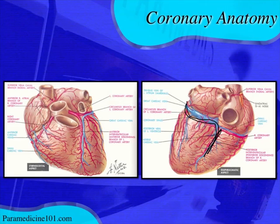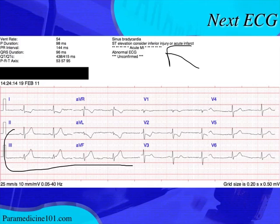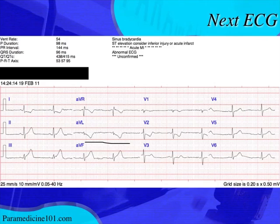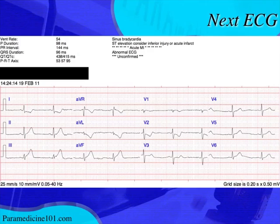We got a second 12-lead from the crew that ran the case, and this time it called an acute MI. It's an inferior wall MI — ST elevation mostly in lead III, a little in AVF, with reciprocal changes in the high lateral leads, especially AVL, which is a very common early finding in inferior wall MI. You should also know how to do a posterior 12-lead because posterior changes can sometimes be the first finding. This pattern is also indicative of a possible right ventricular infarct.